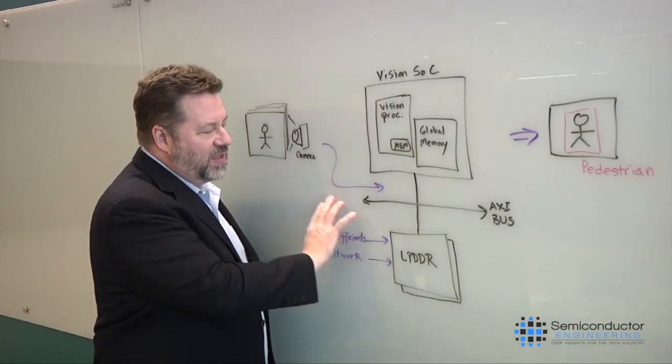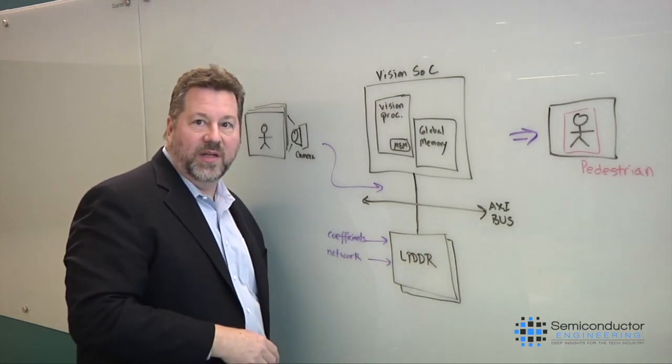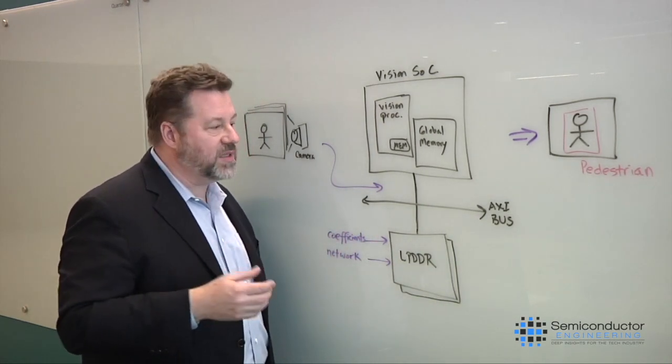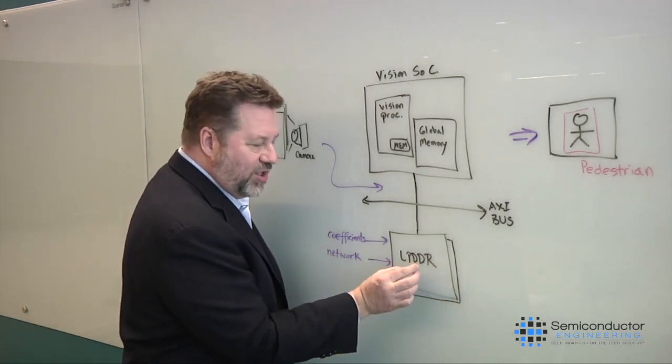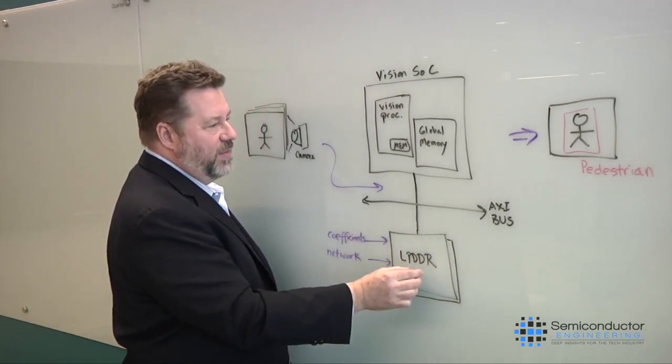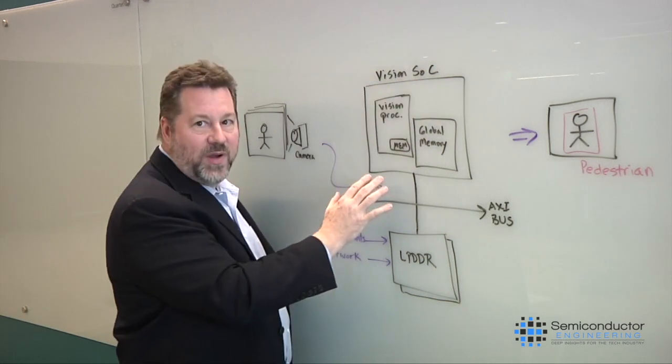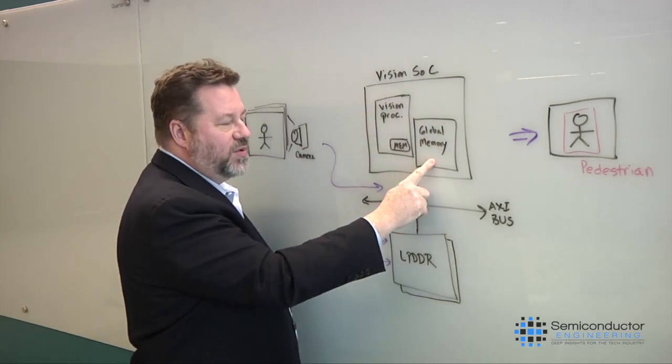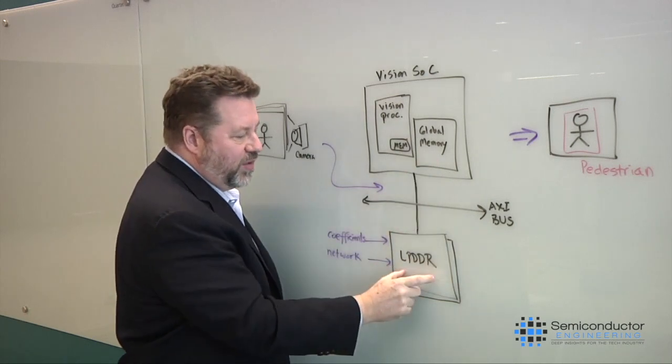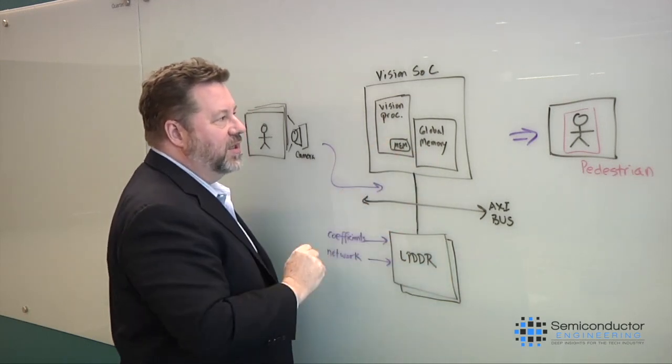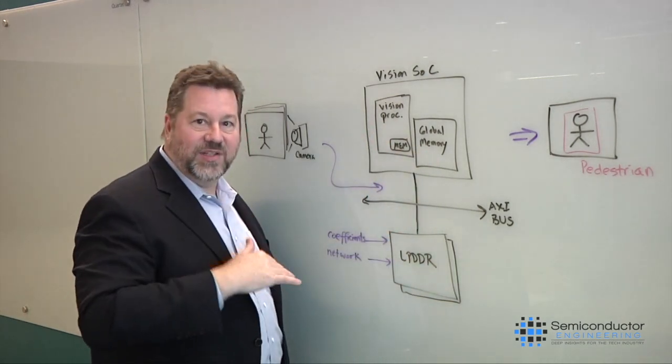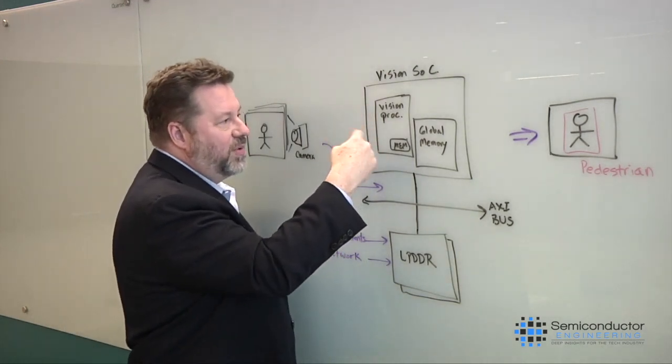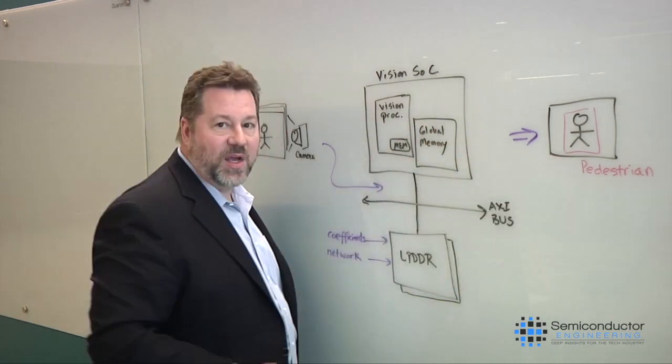Essentially, you have to move all this data into an internal memory. And most of our customers use LPDDR for power reasons. From there, you're taking chunks of those frames of images into your internal vision processor. So if this is your vision SoC, you have a vision processor, you have some internal memory and some global memory, you have to bring chunks in and process it here. Now, the vision processor is essentially a giant math engine. So you have multiplies and accumulates, and you're doing a tremendous amount of computations to get to this output.